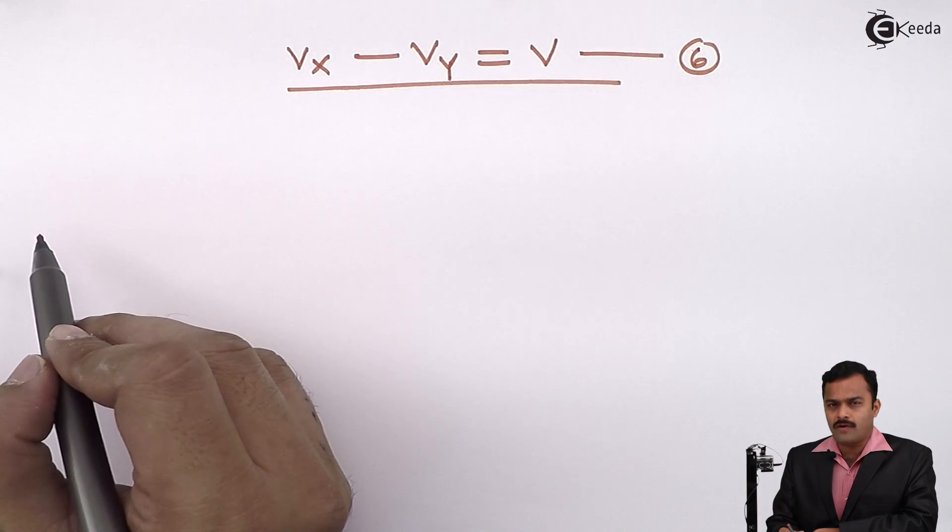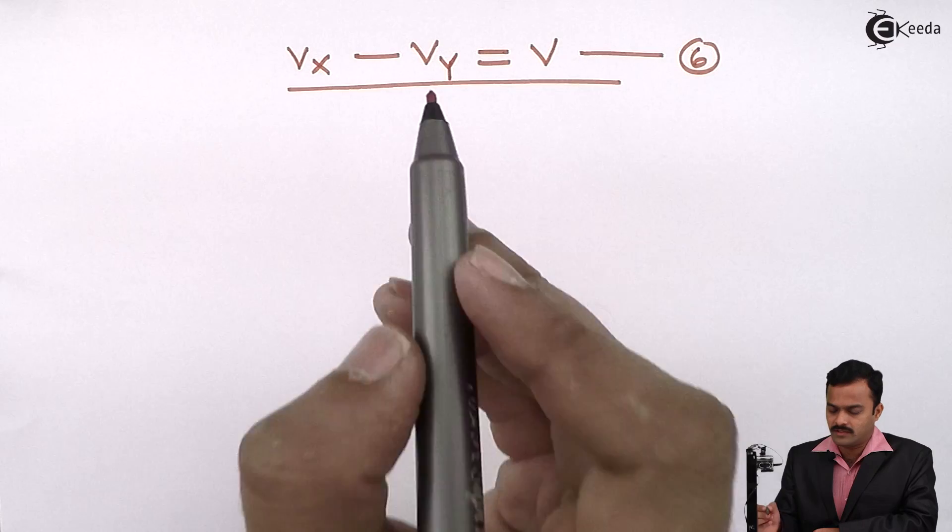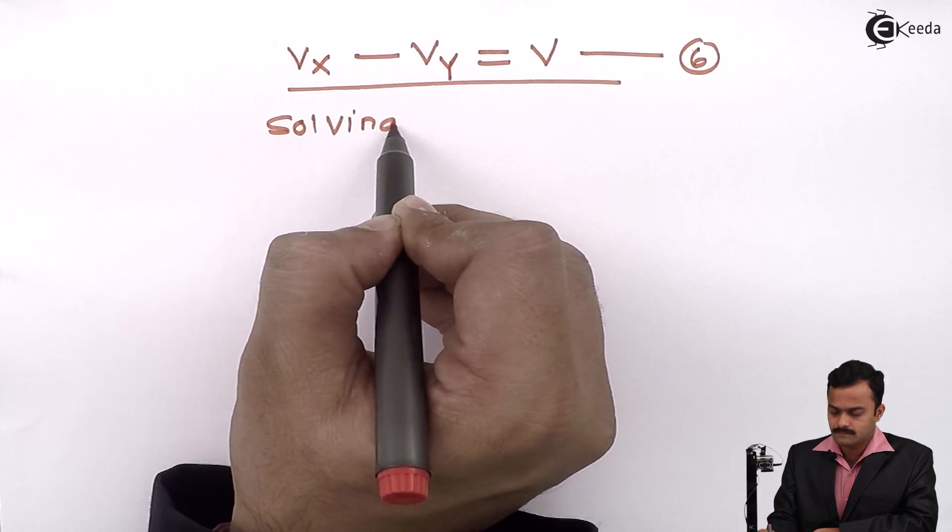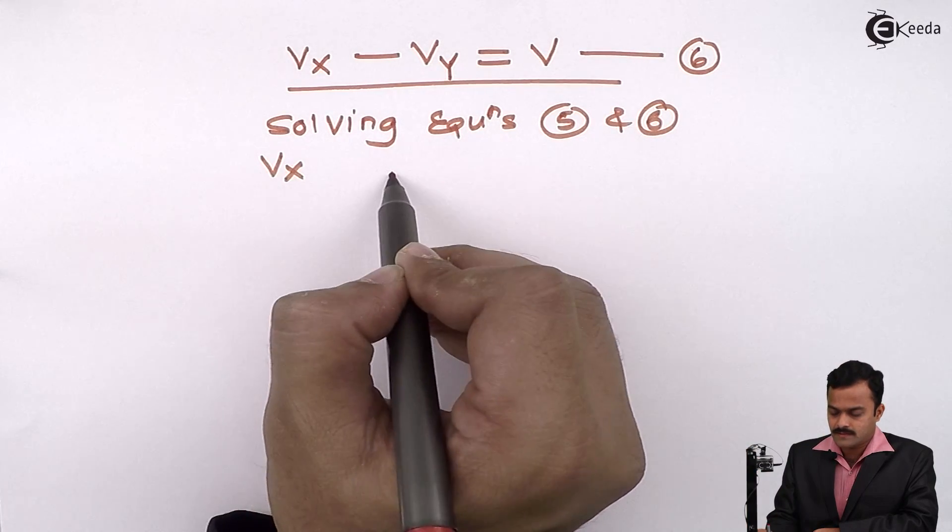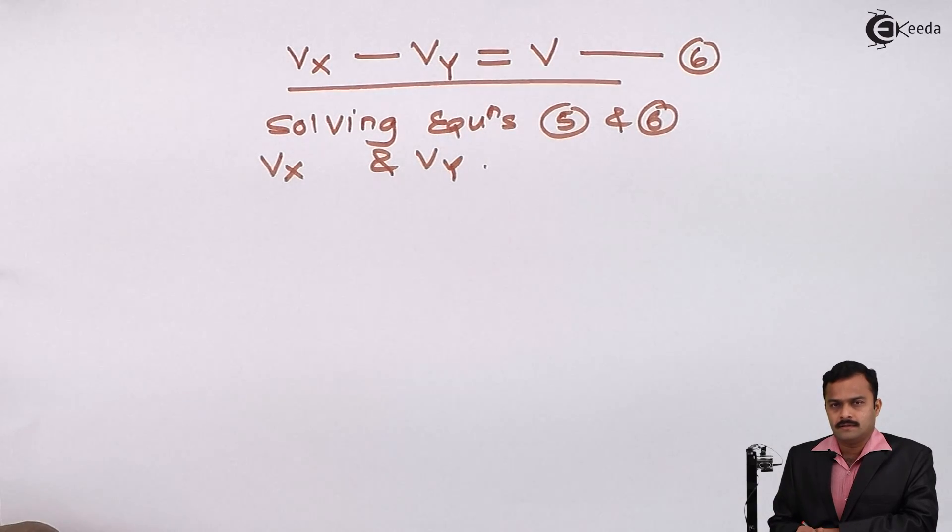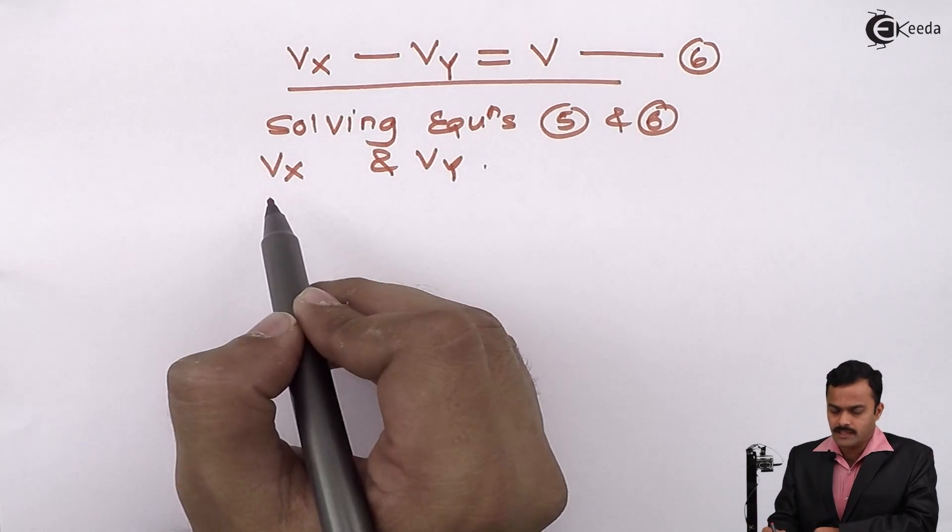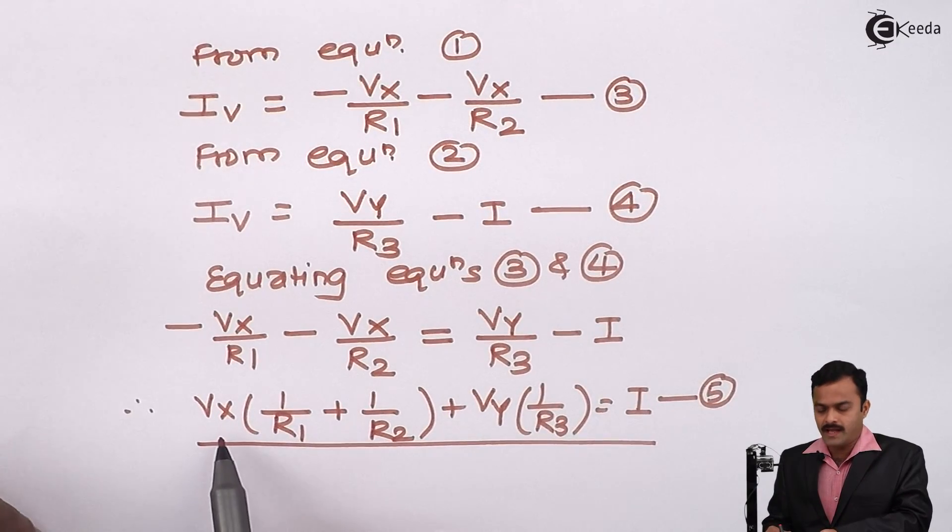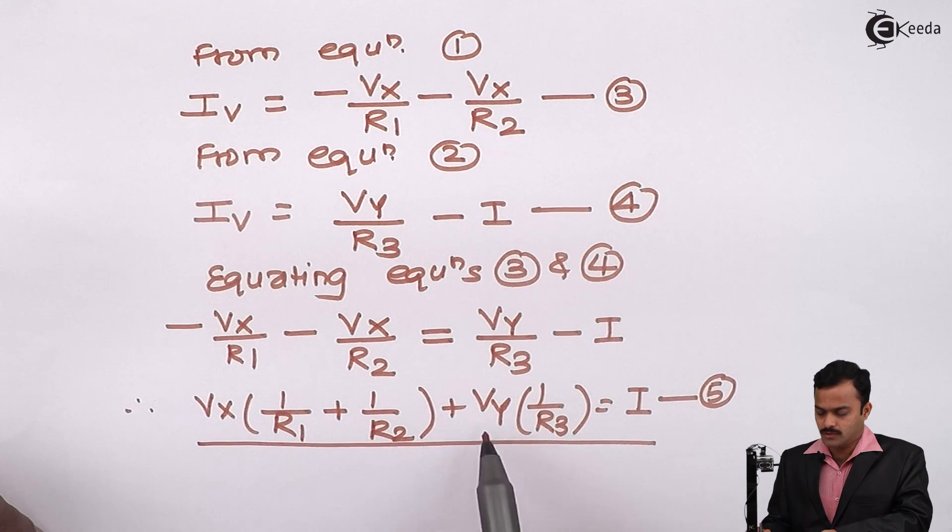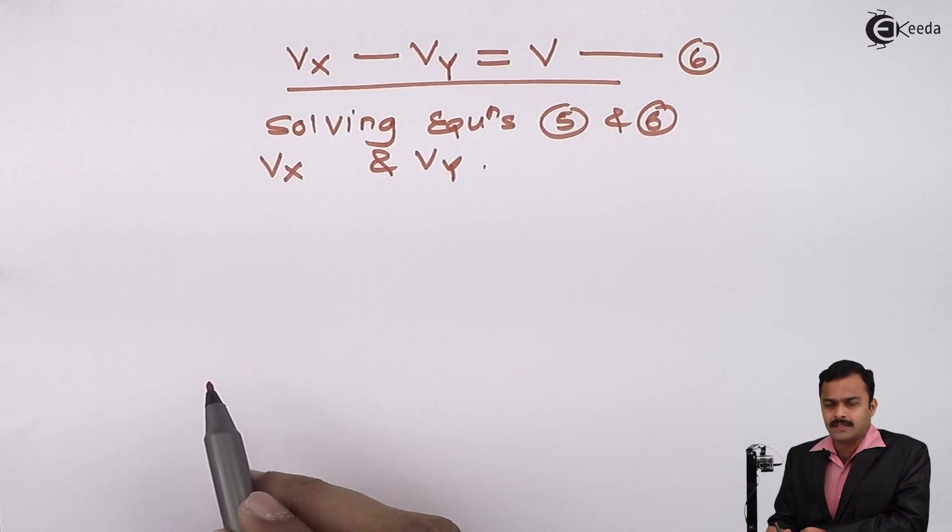So equation 5 and equation 6 are in terms of node voltages and solving them. I will get node voltages Vx and Vy. So our work is done. But we need to apply such a long process. In order to avoid that, let's generalize the thing. Now let's go back to the equation 5 once again. It is Vx bracket 1 by R1 plus 1 by R2 plus Vy 1 by R3 equal to I. So let's generate this equation directly.